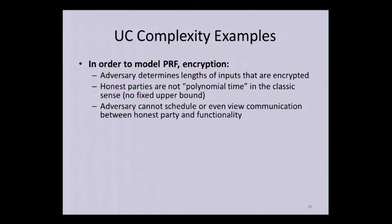That's the great generality, but with generality comes complexity — it doesn't come for free. In order to model something like a pseudorandom function or encryption, we get into trouble: things we normally take for granted as being simple are no longer simple at all. A machine is polynomial time if there's a single polynomial that upper bounds its running time. But for a pseudorandom function, the adversary gets to query for the value on any number of points it chooses. Inside the UC framework it's actually the honest parties computing the PRF for the adversary, and there is no longer any polynomial upper bound on the honest parties because their running time depends on the adversary.